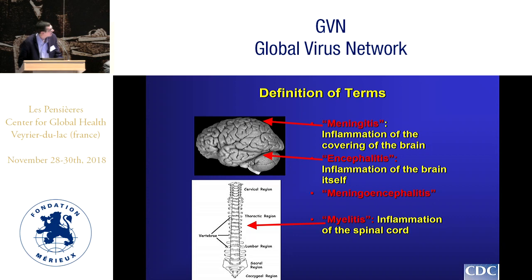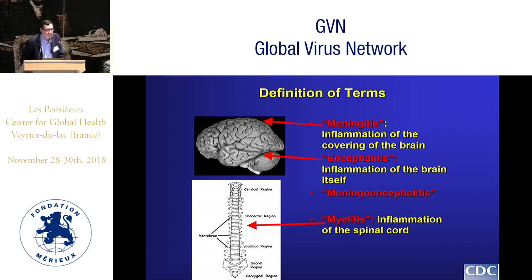Before I launch into that, I just thought I'd define a couple of terms that I'm going to use consistently through this talk. I apologize in advance if this is a bit simplistic for some, but meningitis basically refers to inflammation of the covering of the brain — the meninges — which covers the brain and the spinal cord. People with meningitis typically present with fever, headache, and nuchal rigidity or neck stiffness.